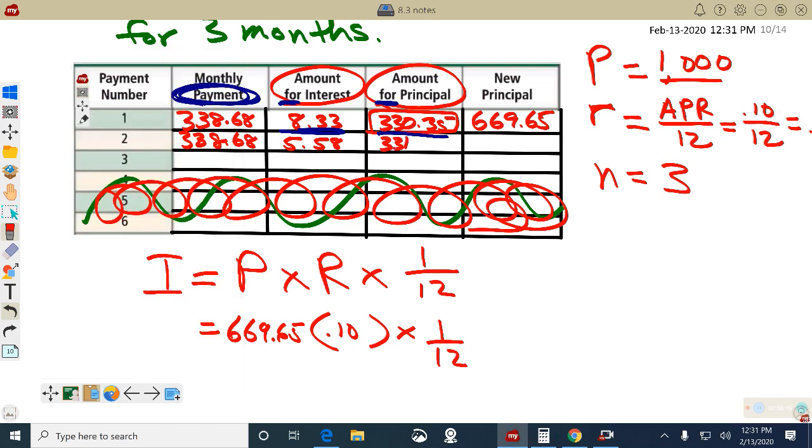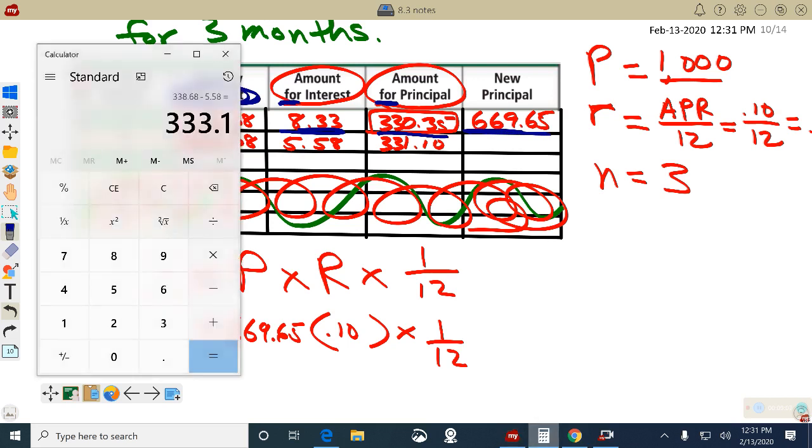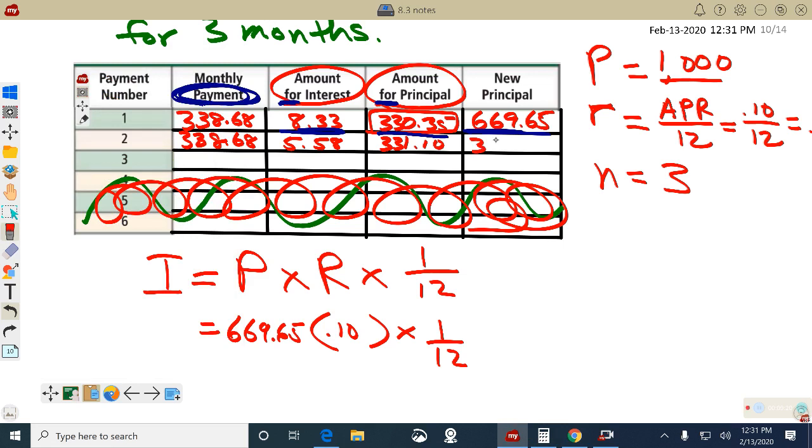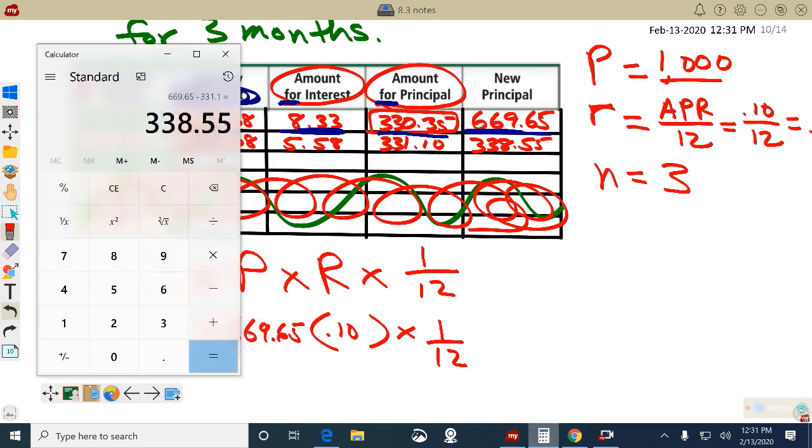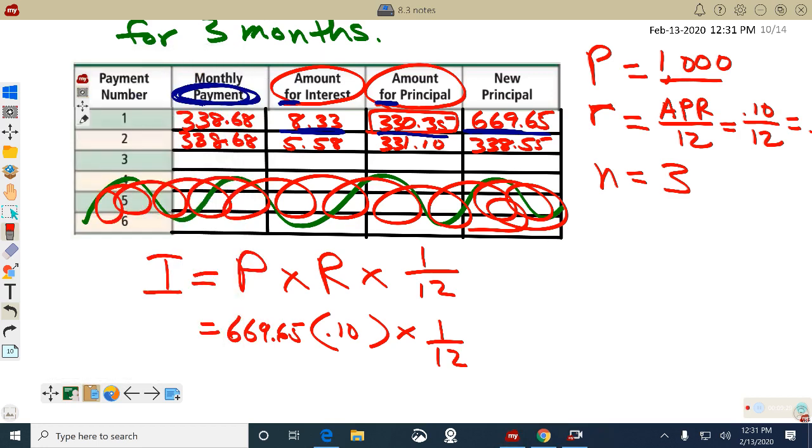So that second payment, $338.68, $5.58 goes to the bank. The rest of the payment goes towards the principal. Let's see. $338.68 minus $5.58. Subtract it. That $331.10 goes towards what was owed. Remember what was owed was this. Keep in mind, what was owed was this. Right. So $669.65 minus what went towards the principal would be left over. $669.65 minus $331.10. $338.55.